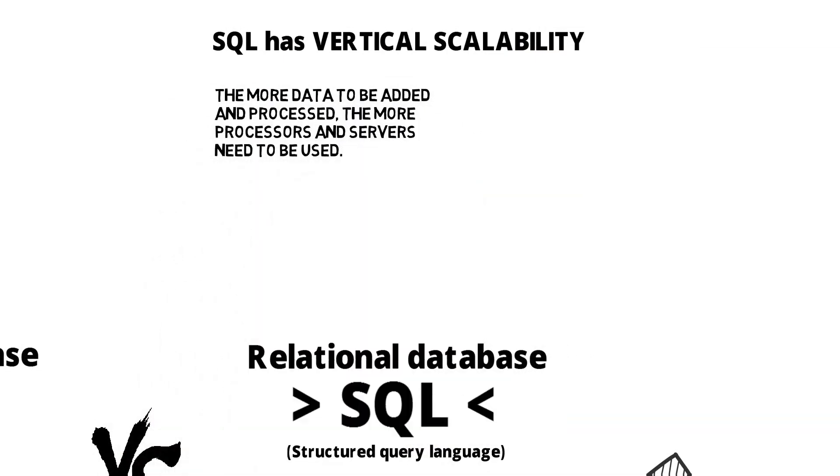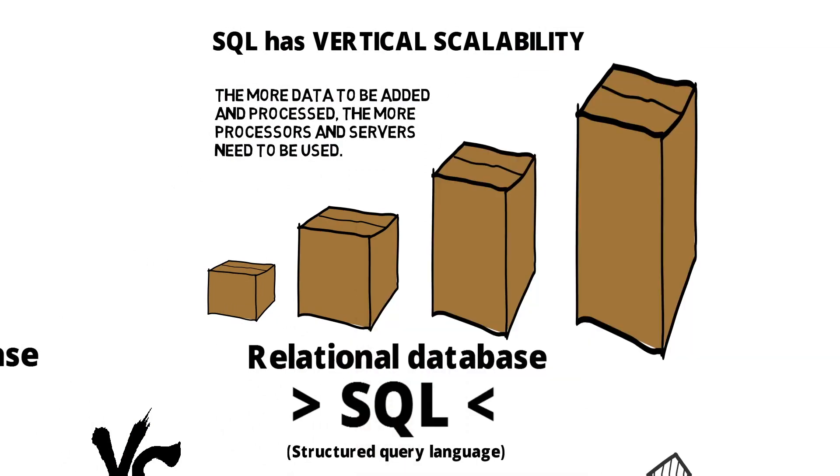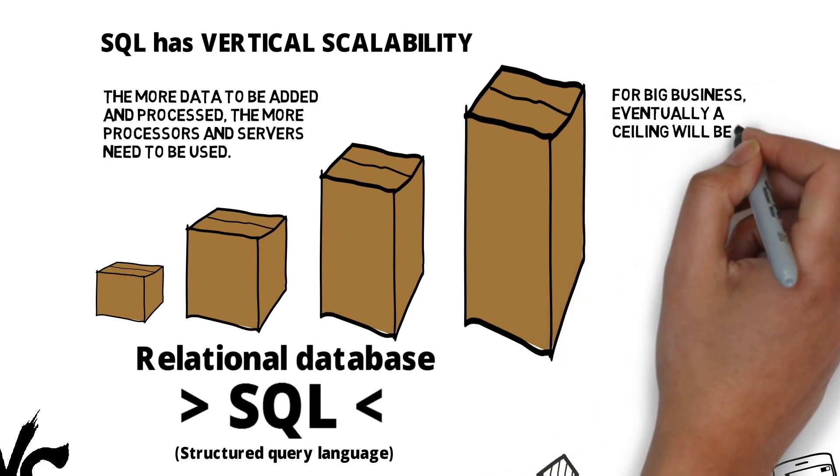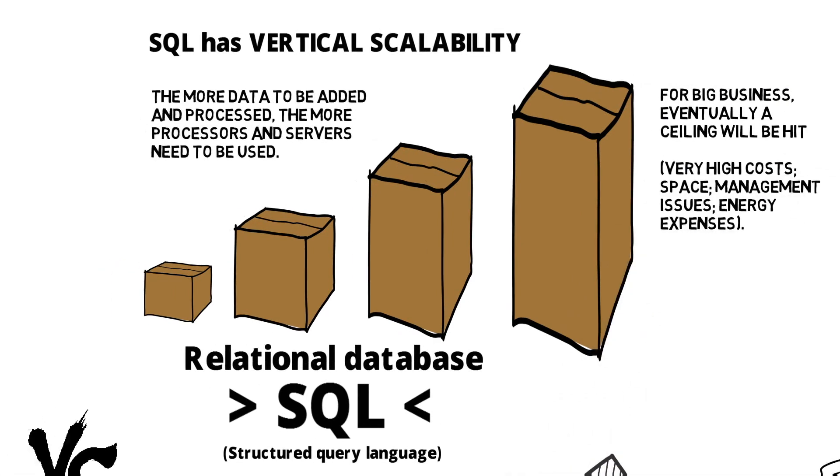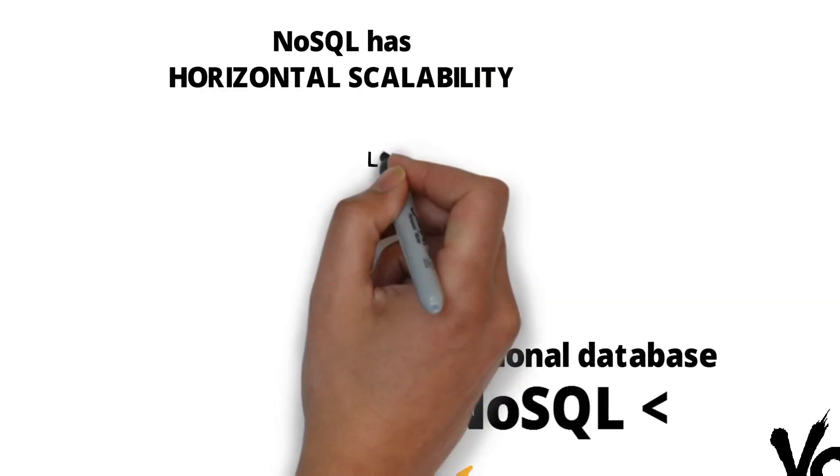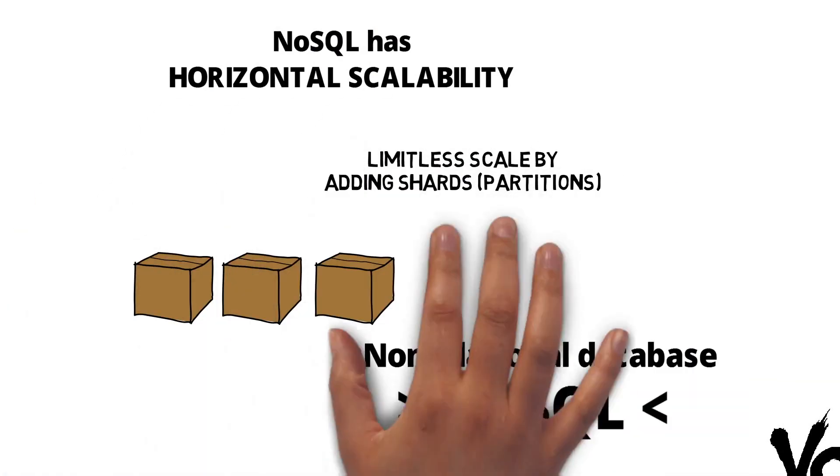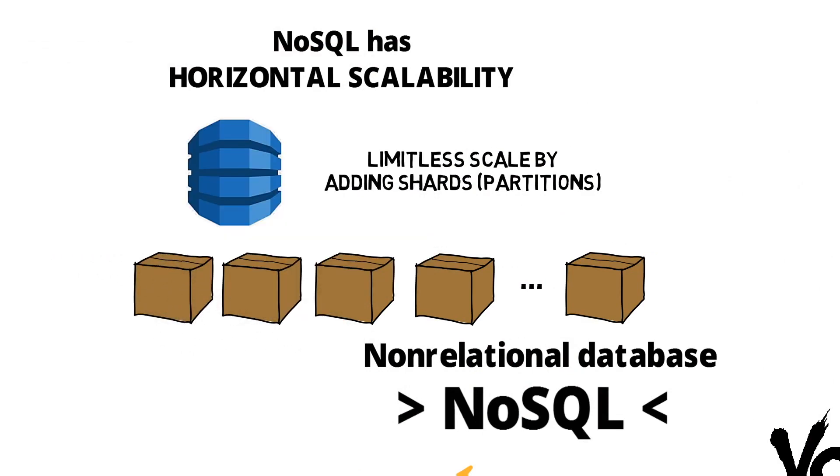The more data to be added and processed, the more processors and servers need to be used. Eventually a ceiling will be hit, meaning there might be very high costs, management issues, and energy expenses. NoSQL has horizontal scalability, meaning it's limitless in scale by adding shards.